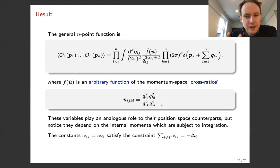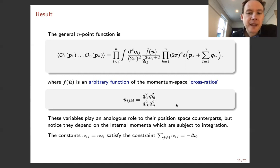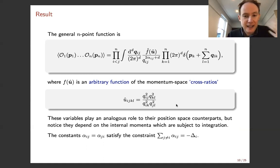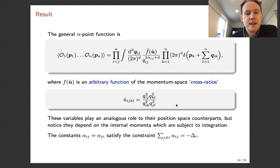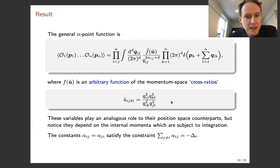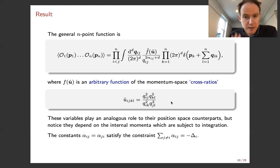The magic ingredient is this arbitrary function f̂. The general n-point function involves an arbitrary function f̂ depending on variables we call the momentum space cross ratios. They look very similar to the position space cross ratios and play the same role, but they're not quite the same: they involve the q_ij's — internal momenta subject to integration. In position space x_ij is the separation of two coordinates x_i minus x_j, whereas here q_ij is the momentum running from vertex i to vertex j on the simplex — it's not a difference q_i minus q_j. The number of independent momentum space cross ratios is n(n-3)/2, the same as in position space.